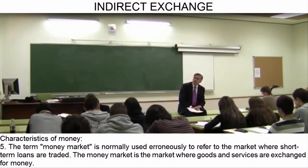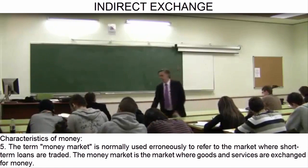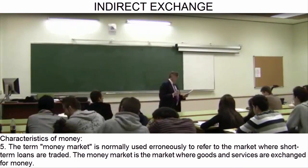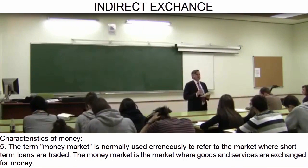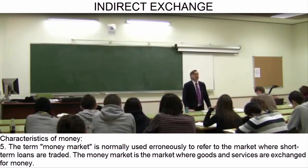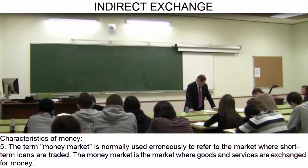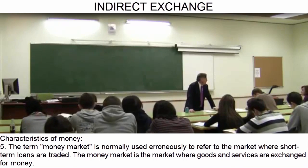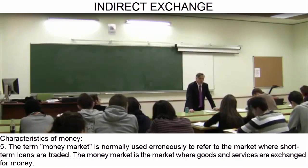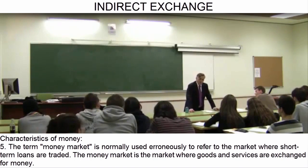To point out the fifth characteristic of money, I would like to touch on an error in terminology. If you pick up a newspaper and read the scientific discussions, you will find people talk about the money market, when the market they are referring to is a short-term loan market — the commercial paper market, the market for government bonds up to one year, the market for what are considered short-term loans.